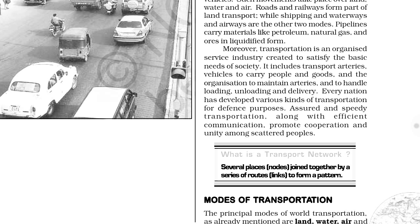Next, what is a transport network? We covered this in the last chapter as well. A transport network is formed when several places are joined together by a series of routes to form a pattern. These places are called nodes and the routes are called links.